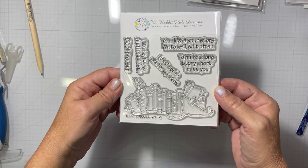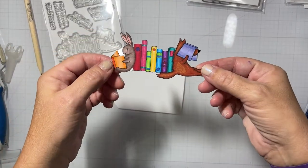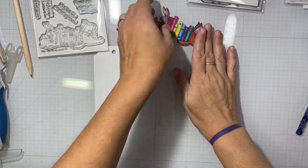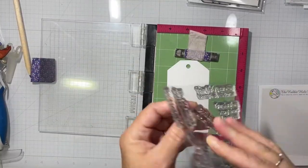Hello everyone, it's Tana. Welcome back to my channel and another video for the Rabbit Hole Designs. Today we're working with the Book Lover stamp set. We're going to make some bookmarks and a really cool card. I really love the way the card turned out.